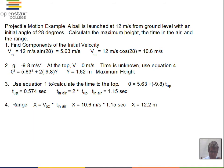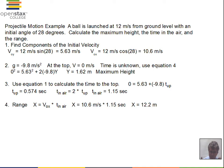At the top the object is not going any higher, so the velocity in the y direction is 0 meters per second. To find the maximum height we don't have the time, so we use equation 4: v_y² = v_{y0}² + 2·a·Δy. Zero equals 5.63 squared plus 2 times acceleration times the y displacement. Solving this gives a maximum height of 1.62 meters.